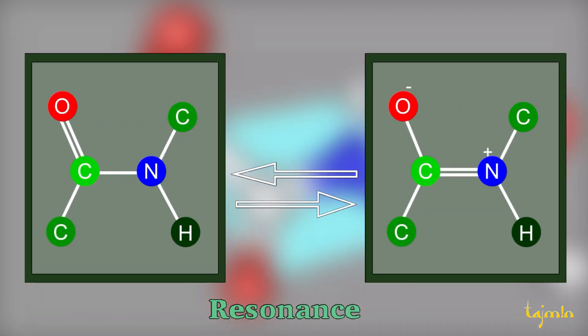Due to resonance, the peptide bond acquires a partial double bond character, and this restricts the peptide bond rotation and makes it rigid and planar.